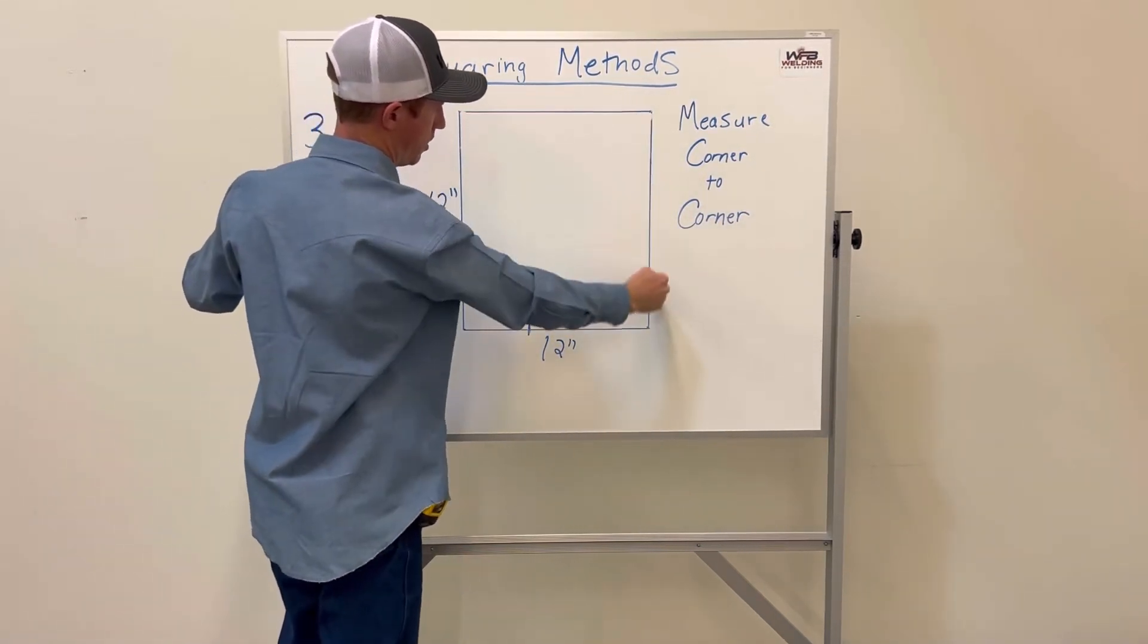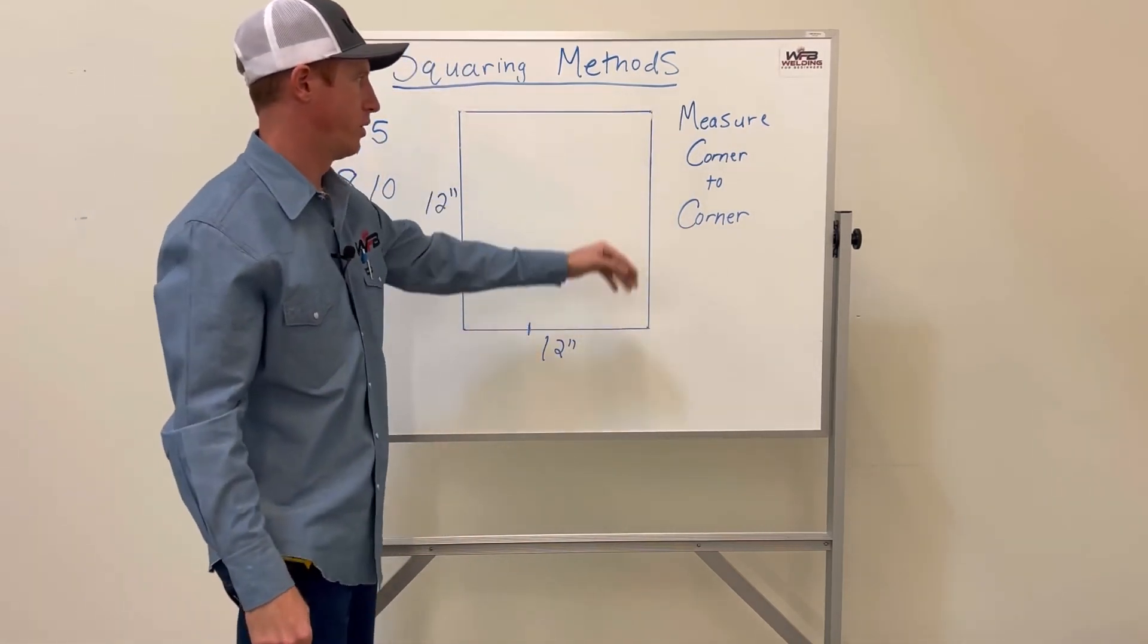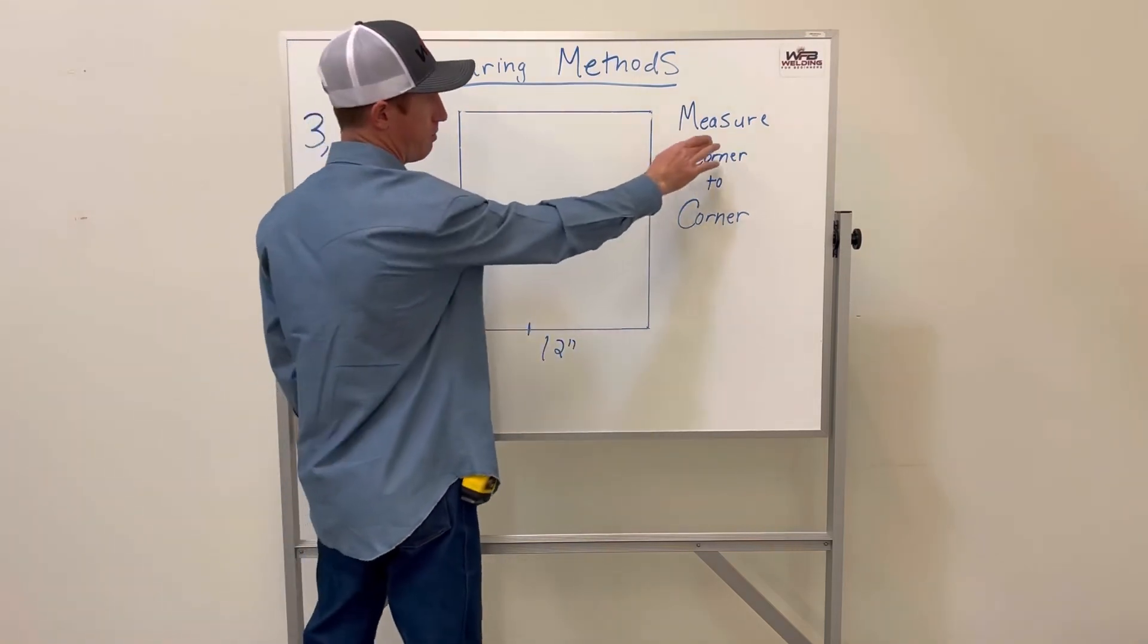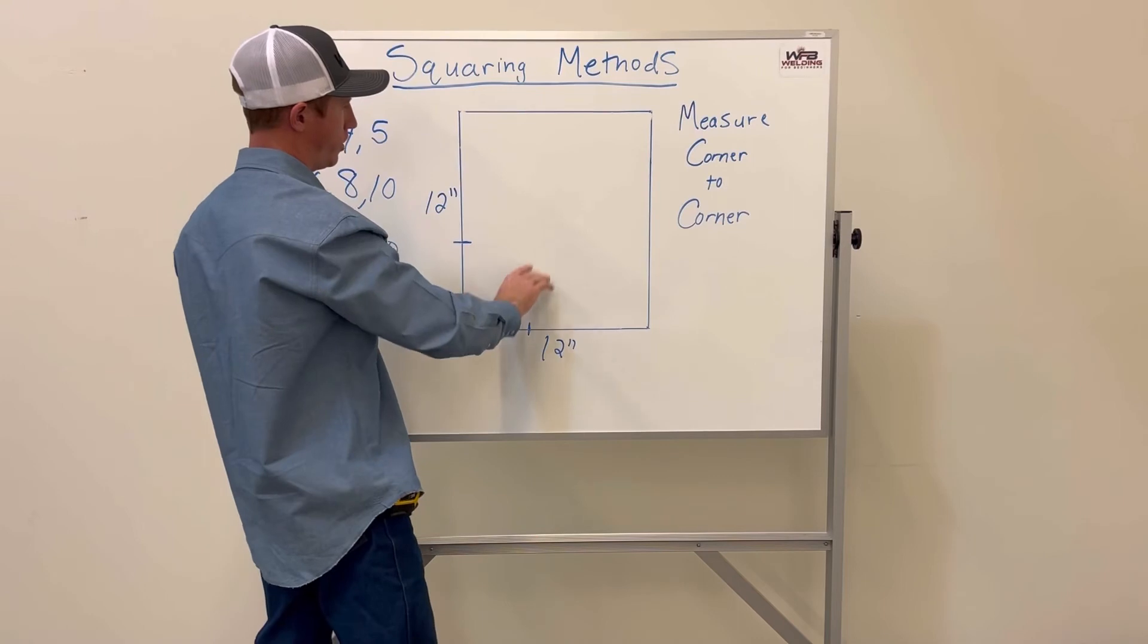That should get you your other perfect 90-degree corner. A good way to check: you can measure corner to corner, from here to here or there to there.